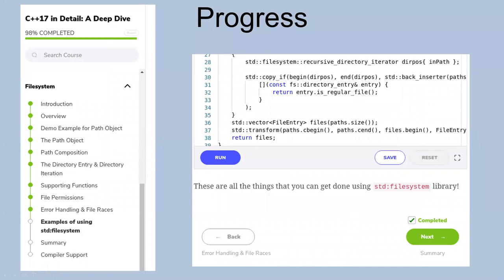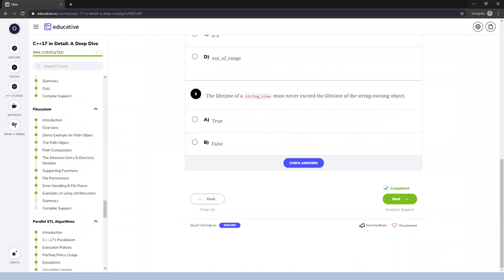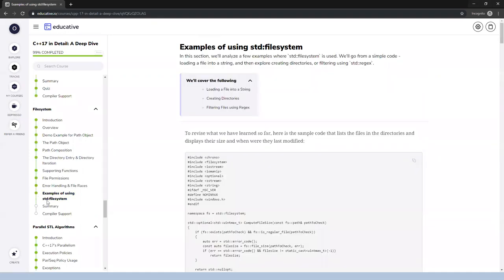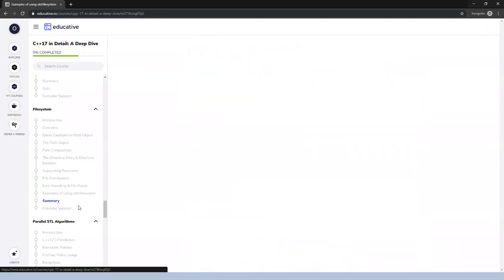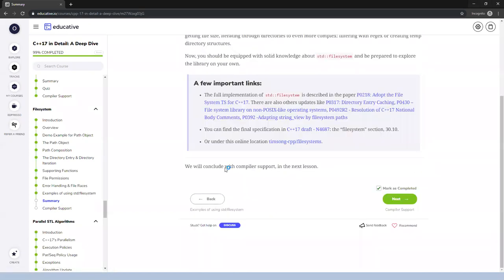Also, you can see your progress for each chapter. For example, some lessons are marked as complete with green color, and other lessons that are not completed are in white. When you finish a lesson, you click next and mark it as complete.